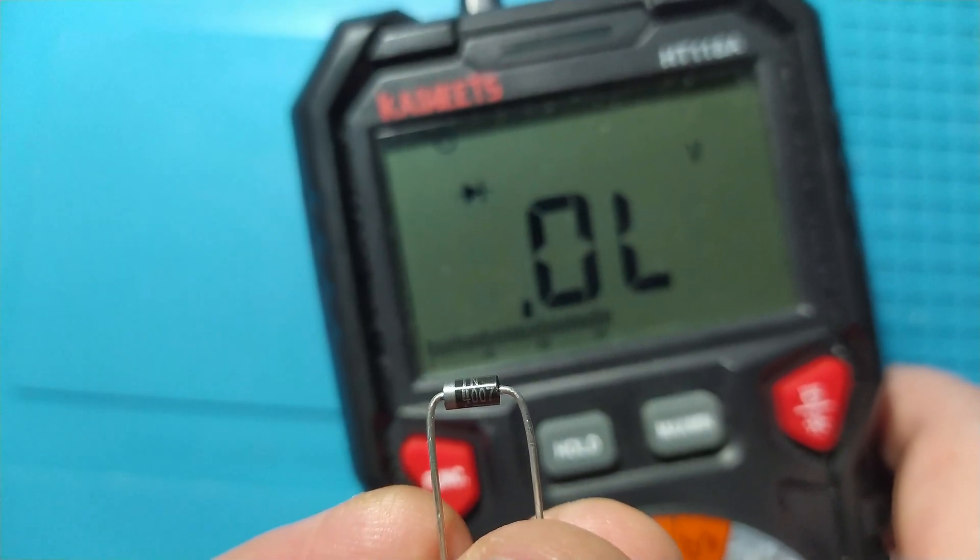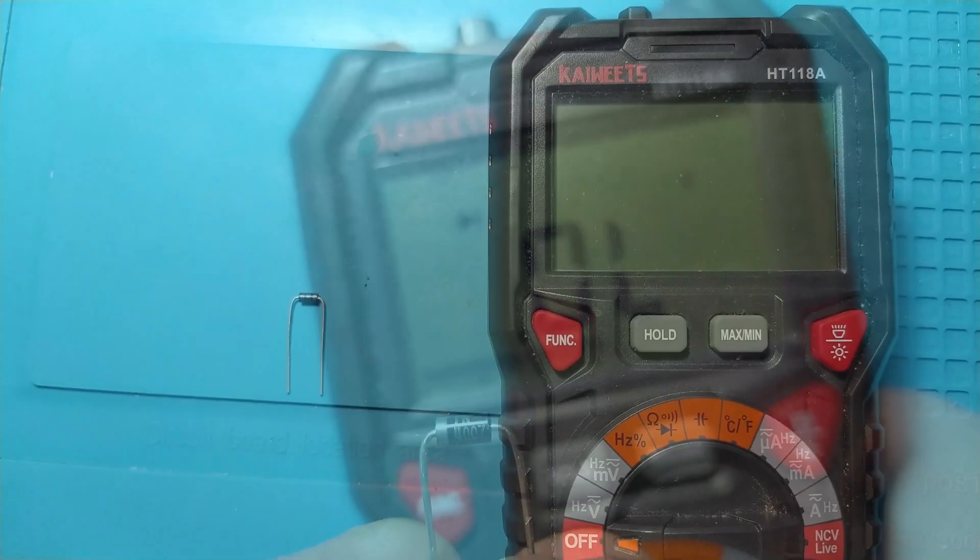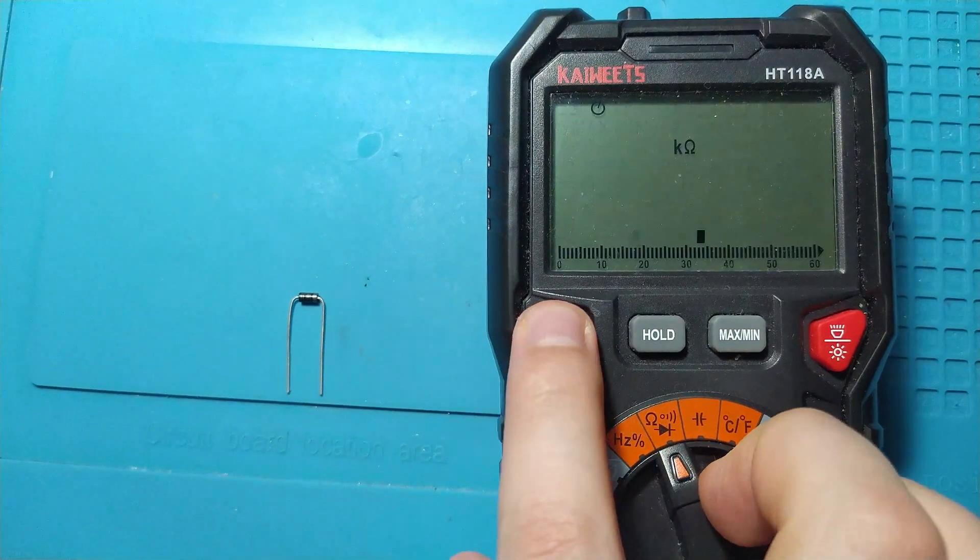How do we test a rectifier diode with a digital multimeter? For this, we select the multimeter on the diode measurement area.